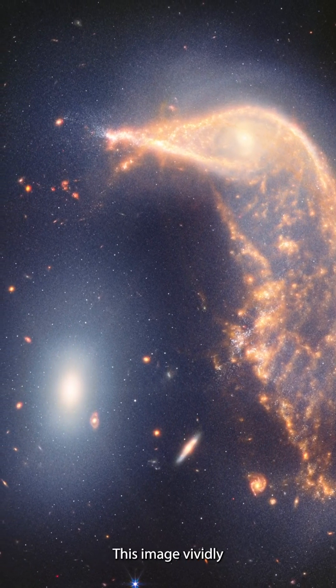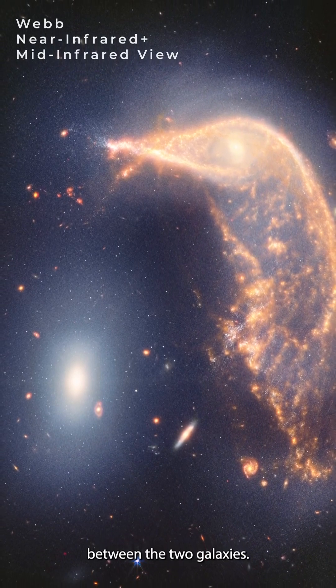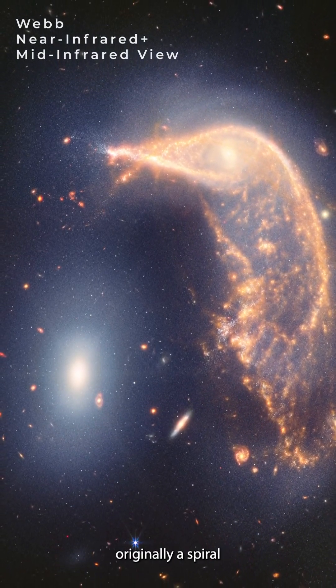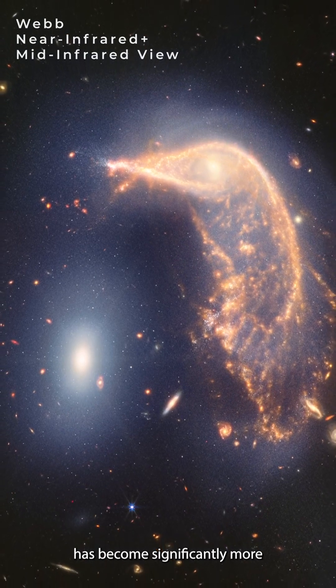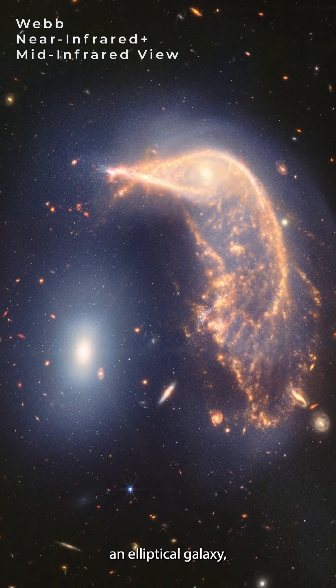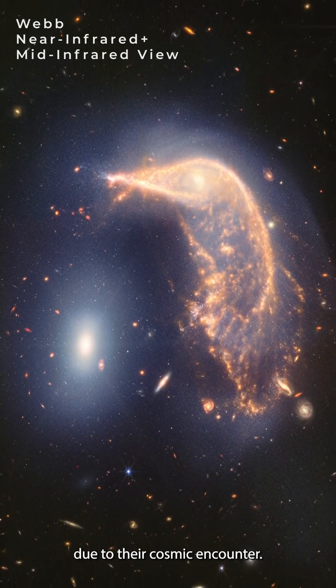This image vividly highlights the interaction between the two galaxies. The Penguin galaxy, originally a spiral like our Milky Way, has become significantly more distorted than the Egg, an elliptical galaxy, due to their cosmic encounter.